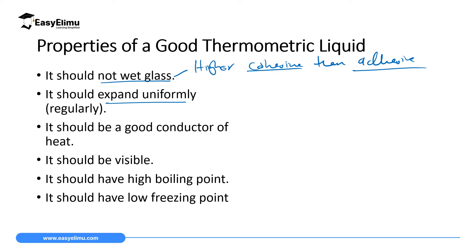Another property is that it should be a good conductor of heat. The thermometric liquid is going to measure change in temperature, so it should be able to absorb heat very fast and conduct the heat within the liquid in a very short time so that any change in volume can be noticed. It should also be visible — it should be seen easily. Some liquids are colorless and cannot be used. Since alcohol is colorless, we have to add a color to it to use it as a thermometric liquid. Mercury, however, is opaque and can be seen easily.